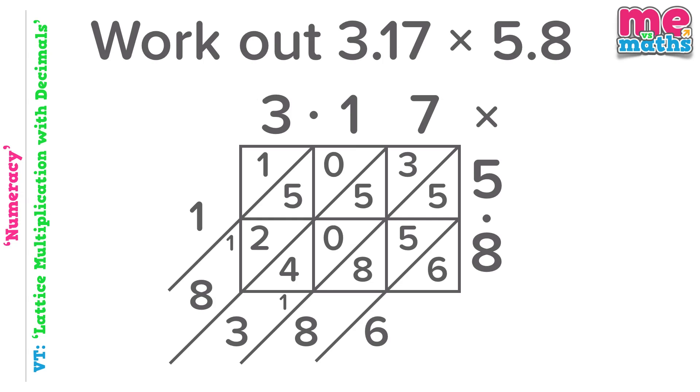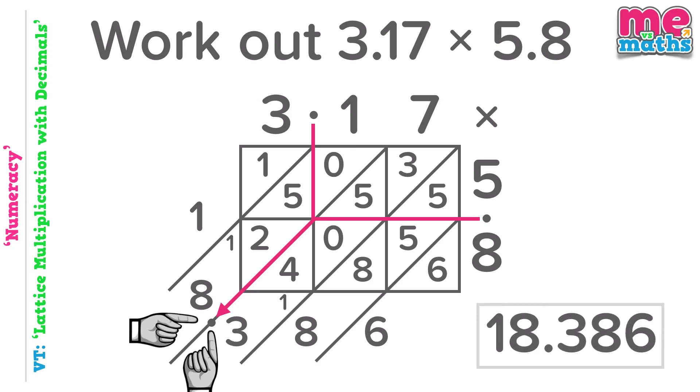Even a quite complex looking question like this one here is made fairly easy. 3.17 times 5.8, we just need a finger pointing at each decimal point down from the one at the top, across from the one at the side until they meet. Follow that diagonal line down to see where our point will go. Final answer this time, 18.386.